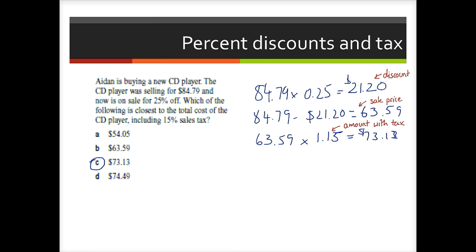This was the third one with discounts, percent discount and tax. I think it was Hannah who suggested this solution. So 25% discount, so if we multiply by 0.25, that will give us our discount. We've got to remember that this is the discount, this is not the sale price. So we have to take off the discount from the original price to get the sale price of $63.59.